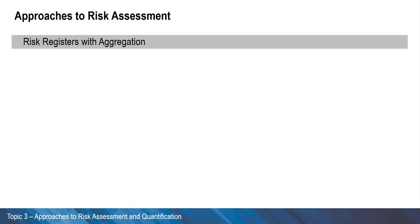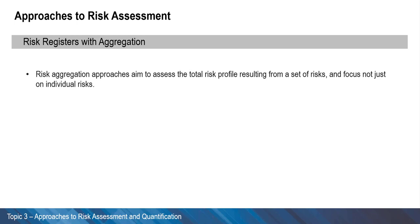Risk aggregation approaches aim to assess the total risk profile resulting from a set of risks, and do not focus only on individual risks. Aggregation is beneficial in many ways — for example, to prioritize risks for mitigation action, or to have a measure of the possible impact of each risk on project-level metrics, to assess the overall value of a project, including whether to proceed with it or not.